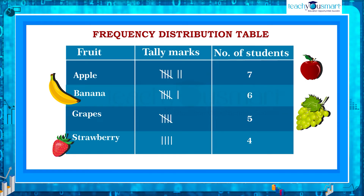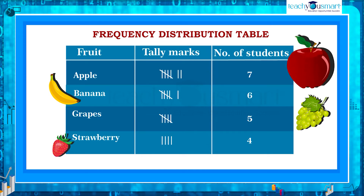Using this table, we can say that the most liked fruit is apple, and the least liked fruit is strawberry.